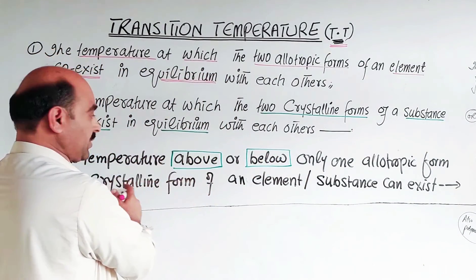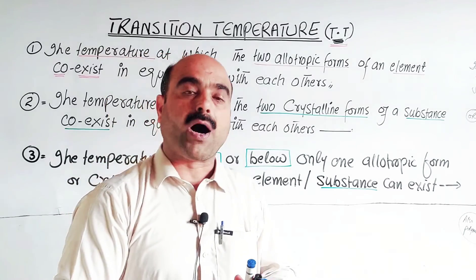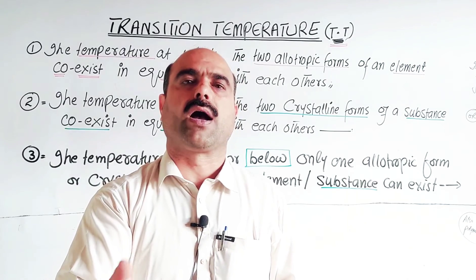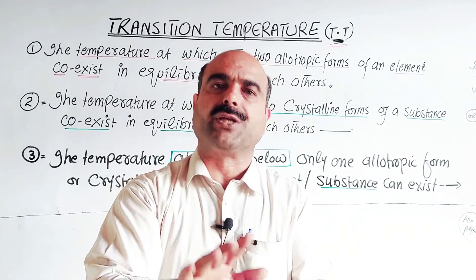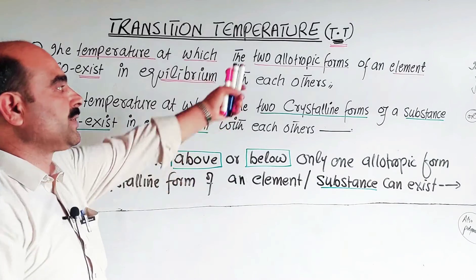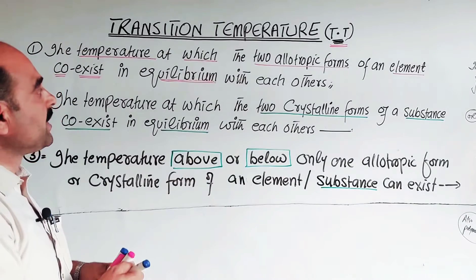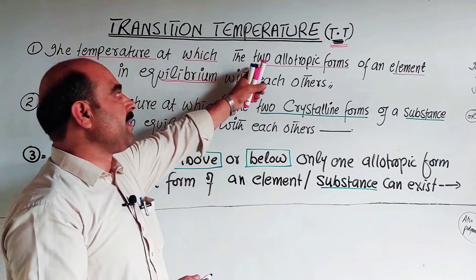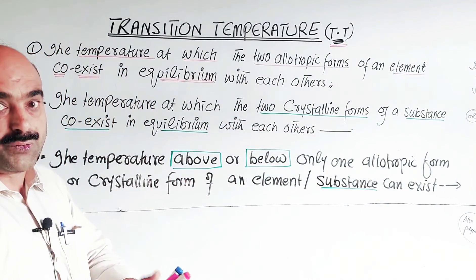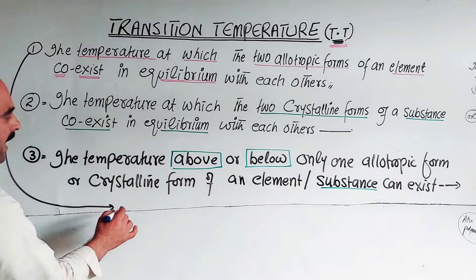Above and below this transition temperature, only one allotropic form or one crystalline form of a substance can exist. Only above or below this temperature, only one state is present. It is only at this specific transition temperature that both allotropic forms of an element co-exist in equilibrium simultaneously.